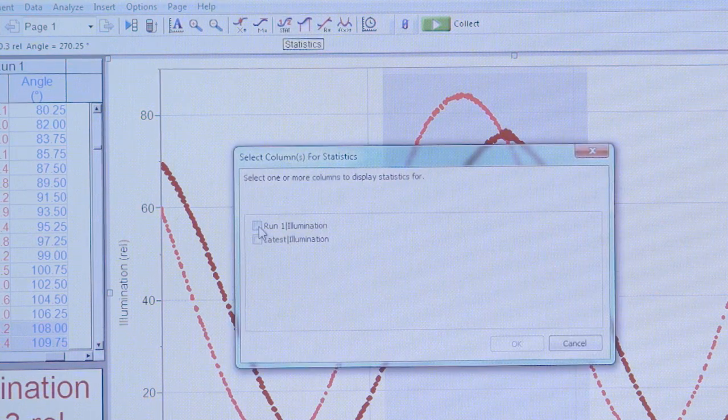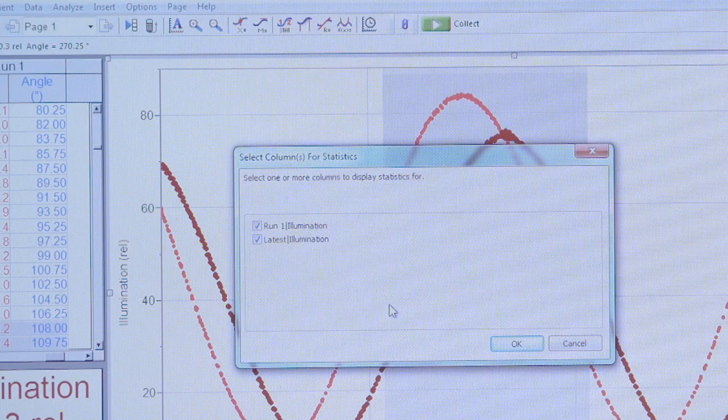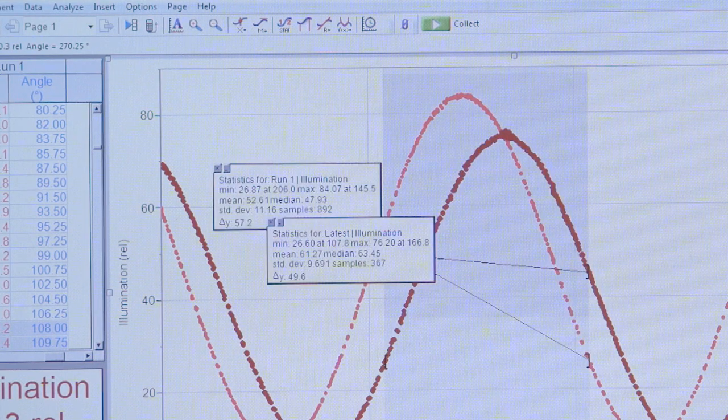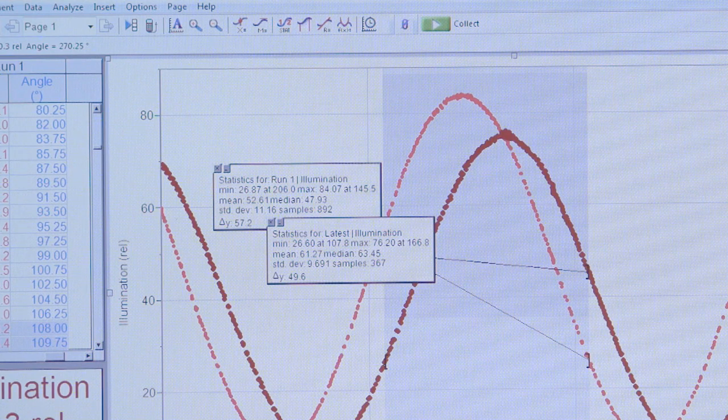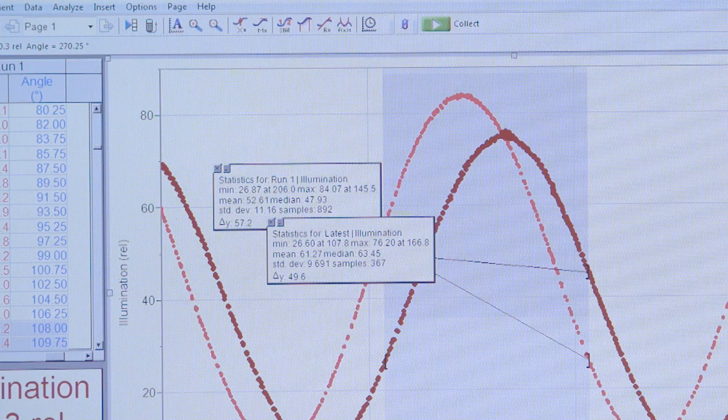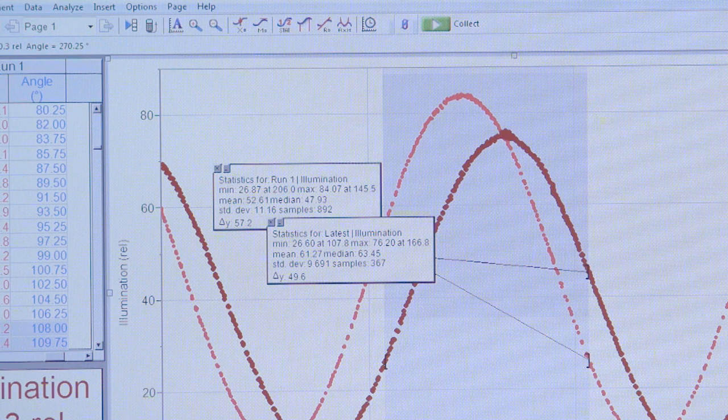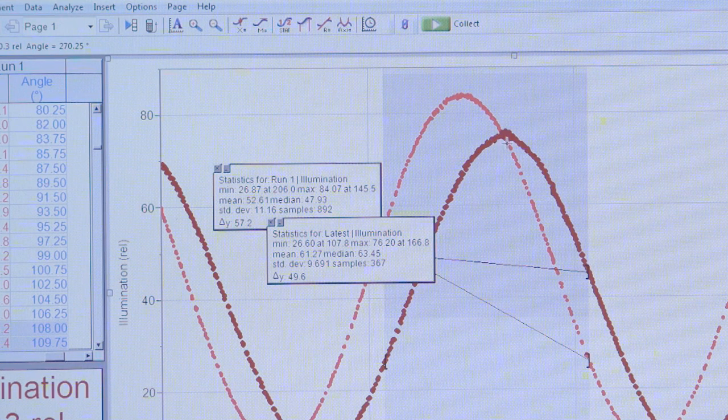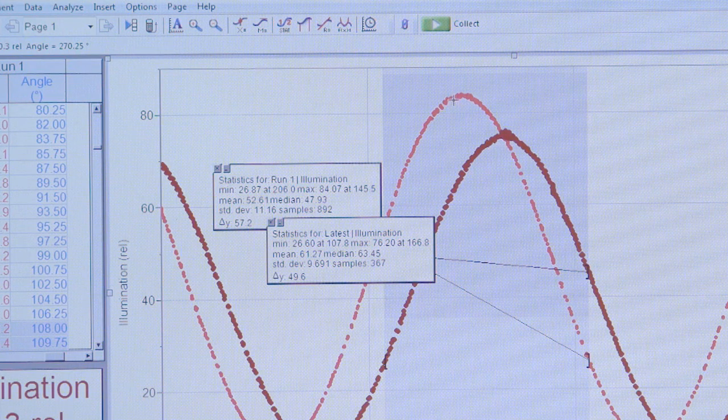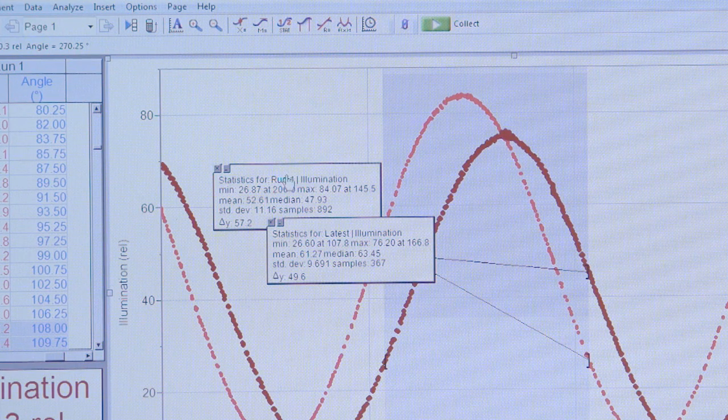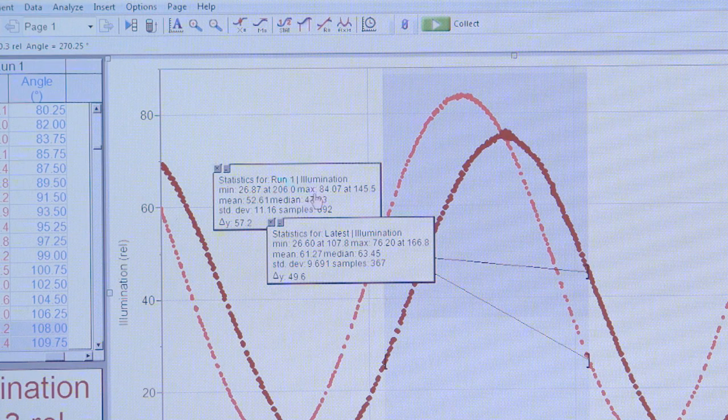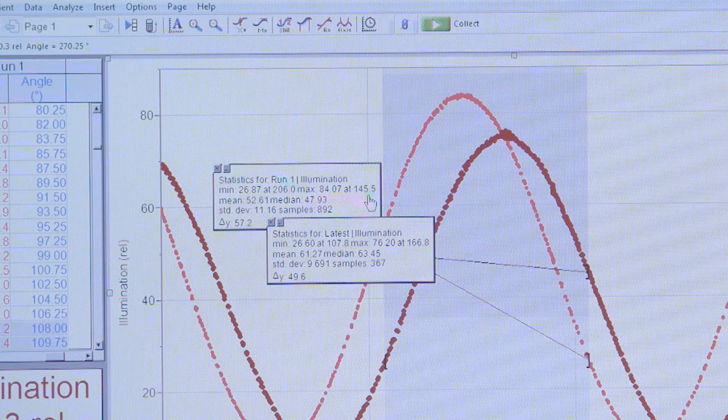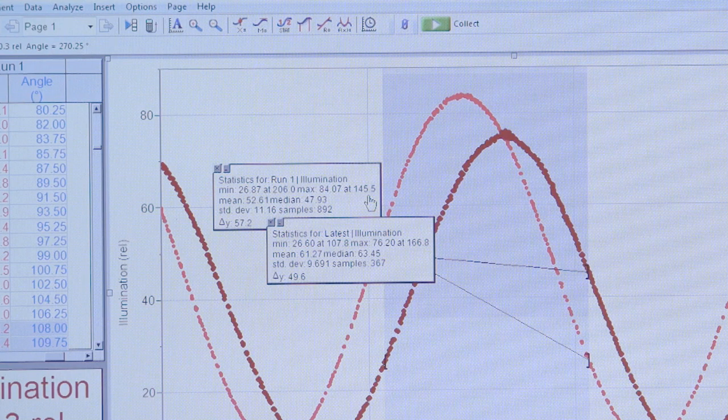I want to analyze both the blank and the sample at the same time. Select okay. The value that I care about when I'm trying to figure out the optical rotation is the angle at maximum illumination, the absolute peak of this wave. Statistics gives you that value with the maximum y at x. This is the value of the angle at maximum illumination.